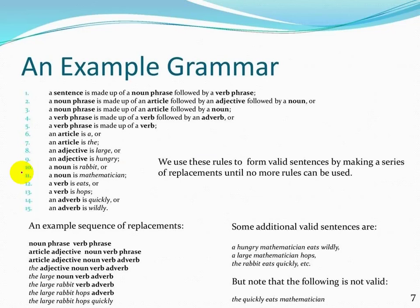There are different examples. If you look at the basic examples, a sentence is made of a noun phrase followed by a verb phrase, articles, and adjectives. These are different examples and you can learn them. A sentence in English is made of parts of speech or grammar combinations. This example is very important in which the sequence of replacements is used to make a sentence.